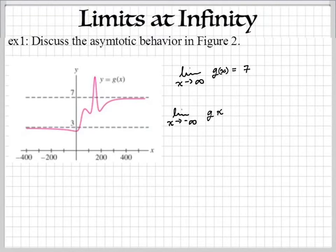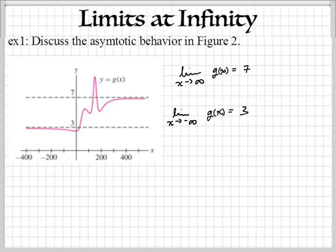Now, as x approaches negative infinity, what's this graph doing? Now we're going this way. What's this graph approaching? Yeah, it's approaching 3. So they're pretty much the asymptotes — asymptotal limits, I'm not sure if that's a word, I'm just making stuff up maybe.